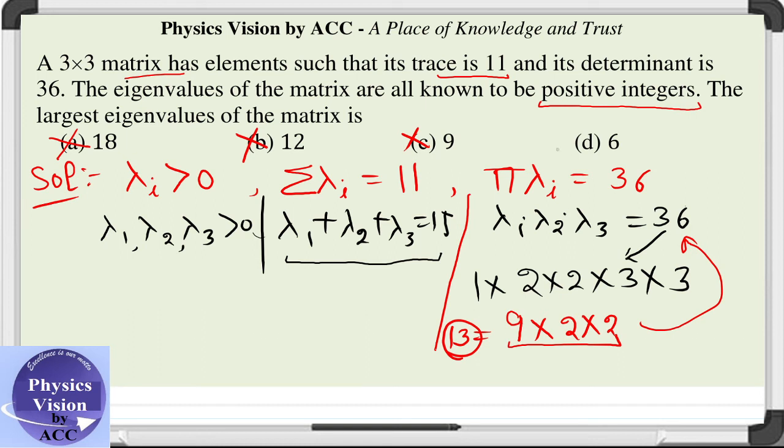Last is option D which is the correct answer to this question. The eigenvalues satisfying all the conditions should be 6 and 3 and 2, which gives us the sum equal to 11 and product equal to 36, and all are positive integers. Hence option D, 6, is the correct answer to this question.